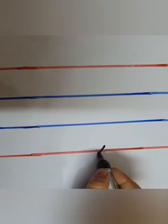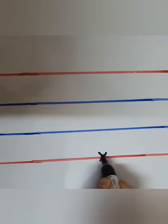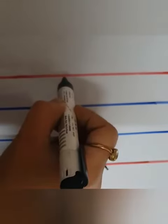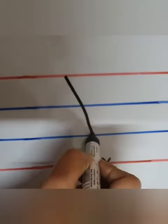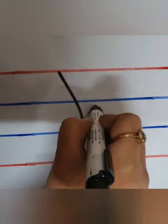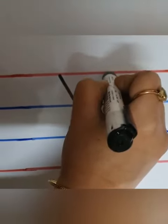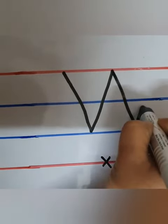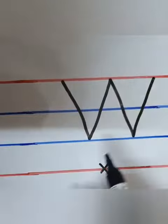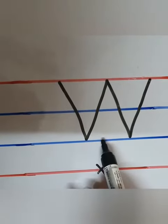Now let's see how to write capital letter W within the lines. For writing capital letter W, the bottom red line is the danger line. We start from the top red line. Make a slant line down till the bottom blue line. Then a slant line up till the top red line. Again a slant line down till the bottom blue line. And then again a slant line up till the top red line. This is how we write capital letter W.